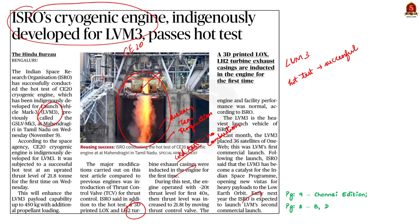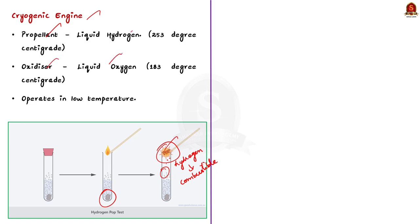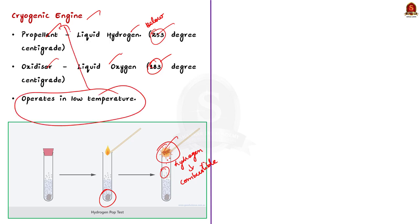Let's see about cryogenic engine and associated technology. The cryogenic engine uses liquid hydrogen as propellant and liquid oxygen as oxidizer. Oxygen liquefies at minus 183 degrees centigrade while hydrogen exists in liquid form below minus 253 degrees centigrade. Since these engines deal with various operations at such low temperatures, they are called cryogenic engines — cryogenic being the science of extremely low temperatures.